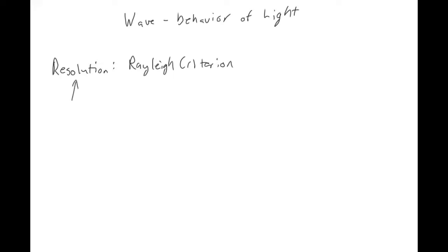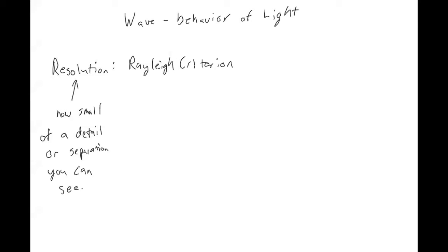Resolution is just how small of a detail or separation you can distinguish. You would have even seen this in the lab, or when you go to get your eyes examined — you look at a chart with letters, and there comes a point where you can't distinguish them because they are too small. This physics will help explain that.